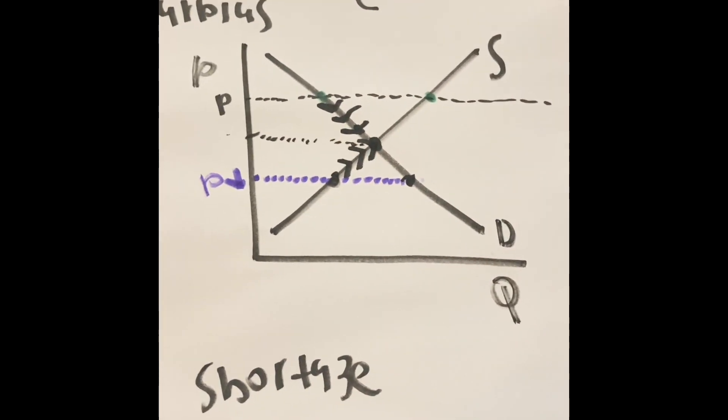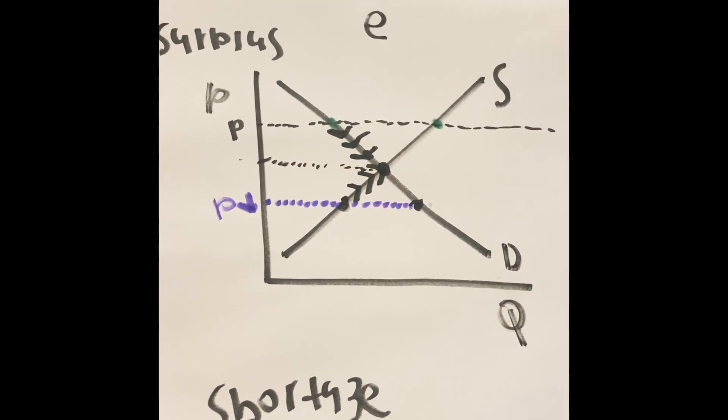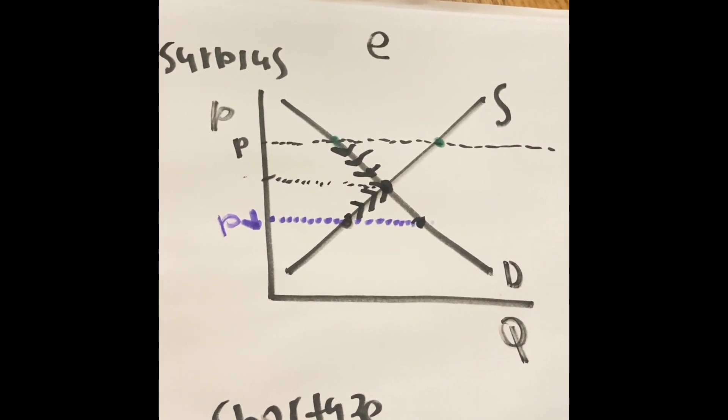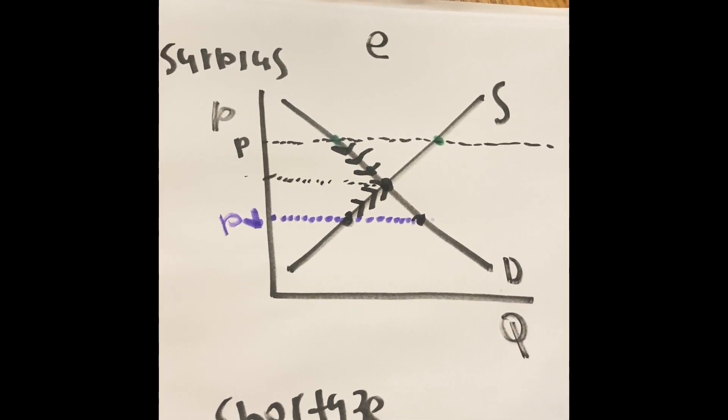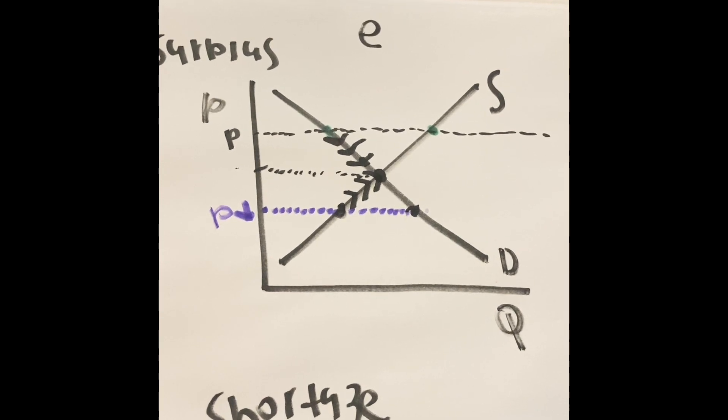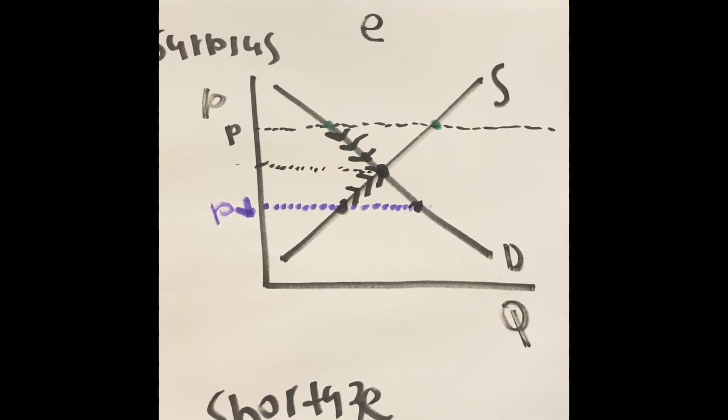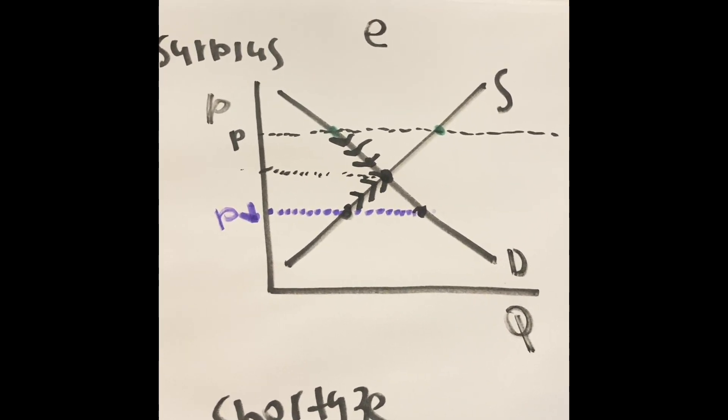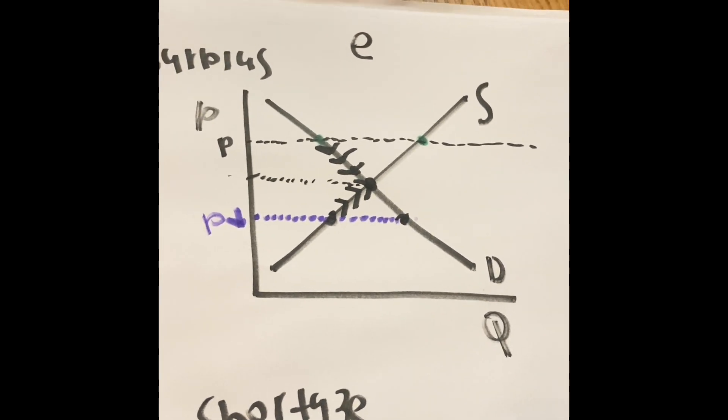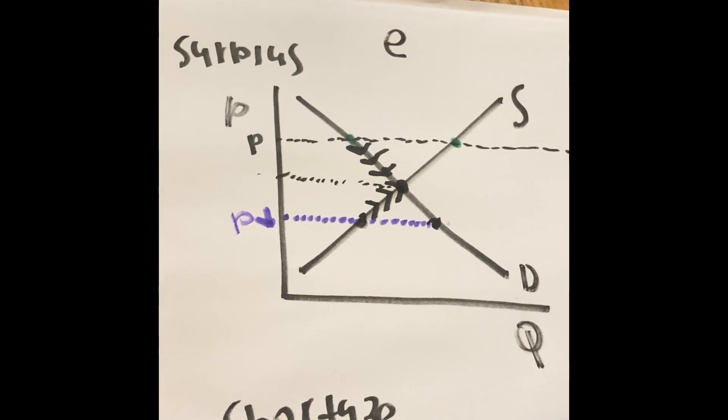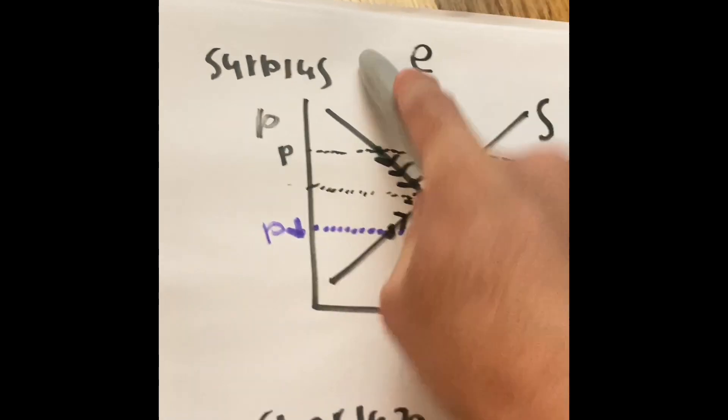If a company or someone reads this graph, then we can understand if we rise the price or lower the price, we can understand what will happen with our supplies and how we can fix it if we're in a crisis, a shortage, and a surplus.